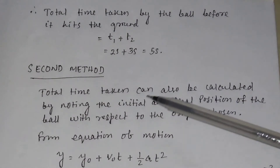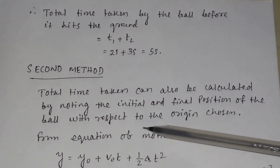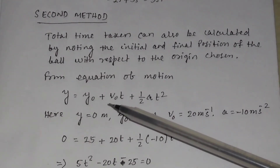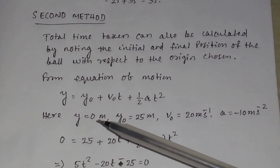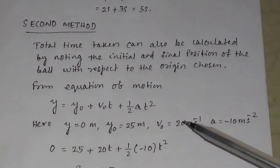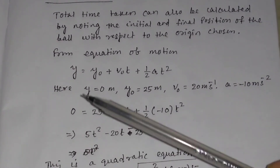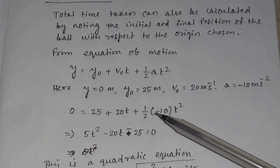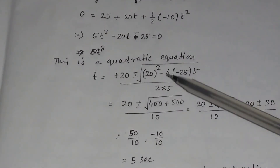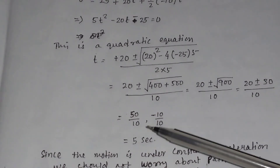In the second method, the total time can also be calculated by noting the initial and final position of the ball with respect to the origin — here the ground. Using the relation y equals y₀ plus v₀T plus half aT², with final displacement y equal to 0, initial displacement y₀ equal to 25 meters, v₀ equal to 20 meters per second, and a equal to minus 10 meters per second squared, this gives a quadratic equation. Solving it yields T equal to 5 seconds and minus 1. Since time cannot be negative, the time value is 5 seconds.